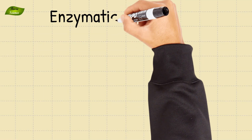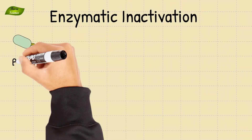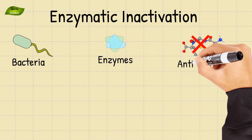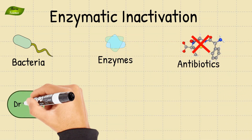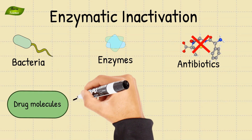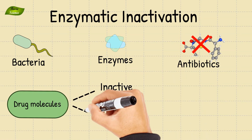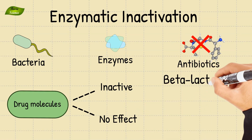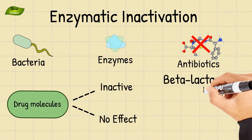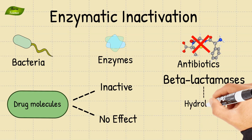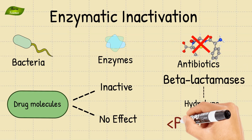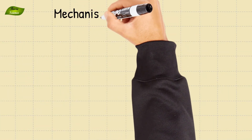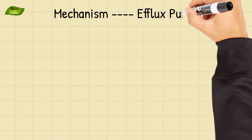Another mechanism is enzymatic inactivation. Bacteria can produce enzymes that chemically modify or destroy antibiotics. These enzymes act on the drug molecules, rendering them inactive and unable to exert their antibacterial effects. An example of this is beta-lactamases, produced by some bacteria that can hydrolyze the beta-lactam ring, inactivating antibiotics like penicillin.